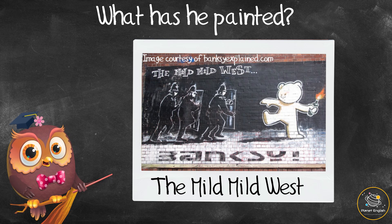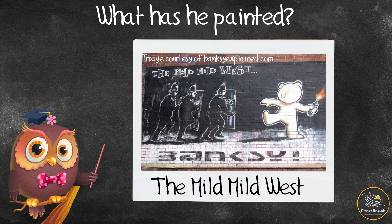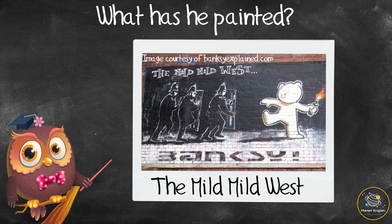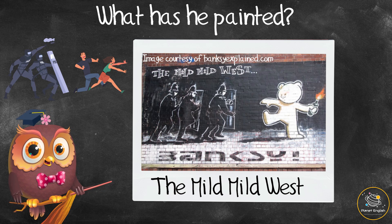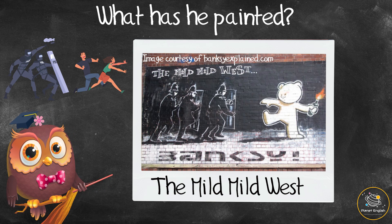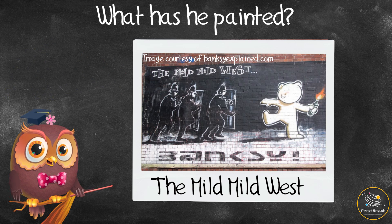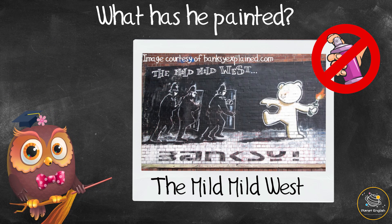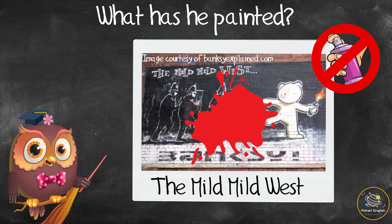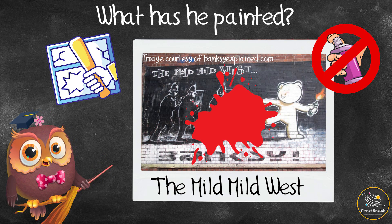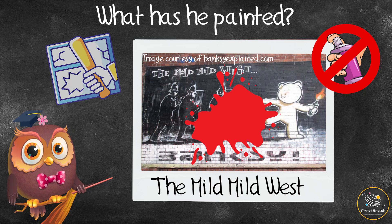Banksy's first known large wall painting was called The Mild Mild West, which he painted in Bristol, England in 1998. It shows a teddy bear throwing a flaming glass bottle at policemen. He painted it after police had attacked people at various parties held in Bristol in the 1990s. In 2007, an anti-graffiti organization vandalized it with red paint.